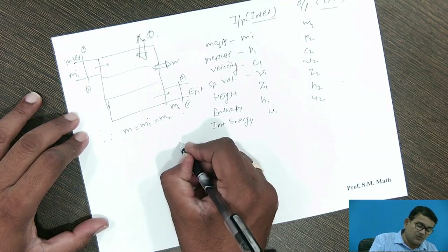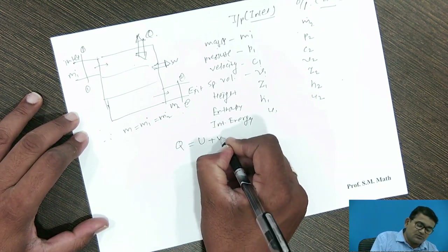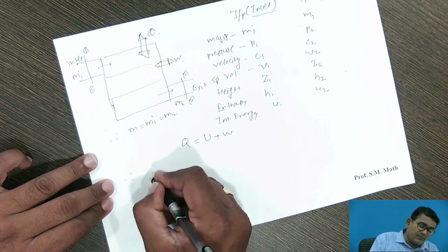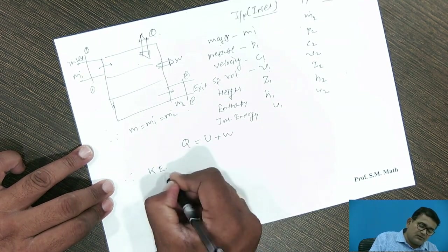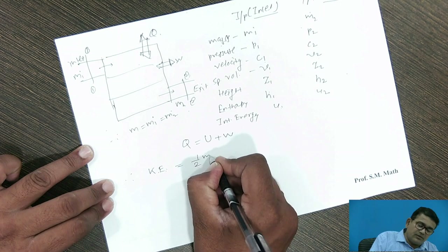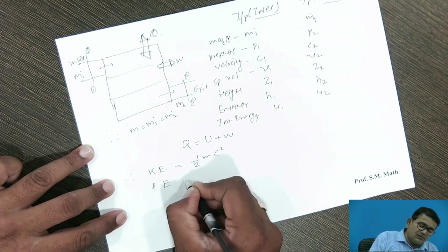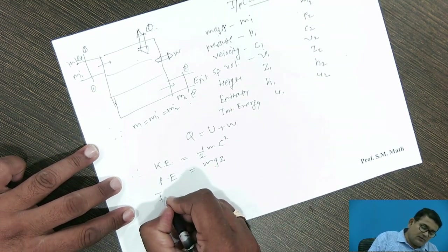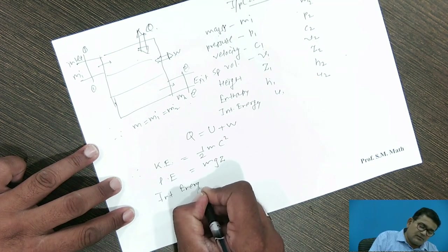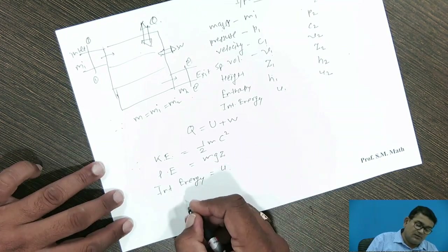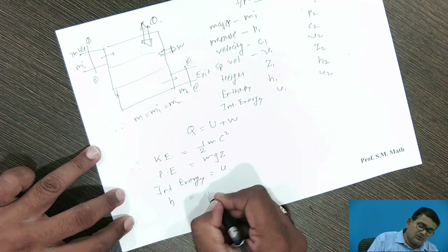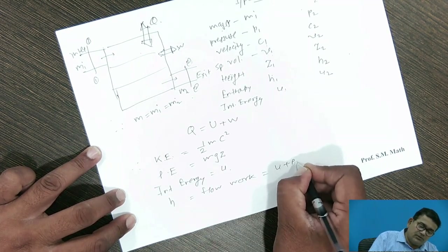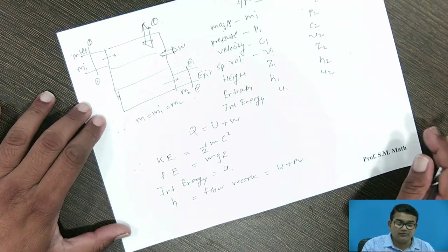By the first law of thermodynamics, Q equals U plus W, where U is the internal energy of the system. Kinetic energy equals half mc squared. Potential energy equals mgz. Internal energy is noted as U. Enthalpy H equals flow work, where H equals U plus PV. These are the formulas we use for the steady flow energy equation.